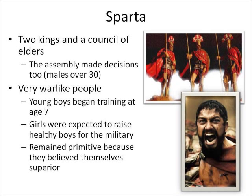The two most important and influential city-states developed in very different ways. Even though both were very powerful, they were very dissimilar. This is Sparta. In Sparta, you have two kings who ruled together, a council of elders who advised the kings, and an assembly that made decisions. The assembly consisted of all male citizens over the age of 30. The most important thing about the Spartans was probably how warlike they were.